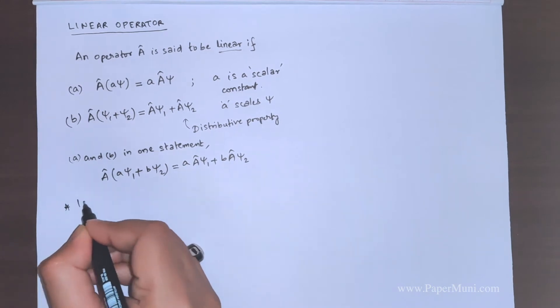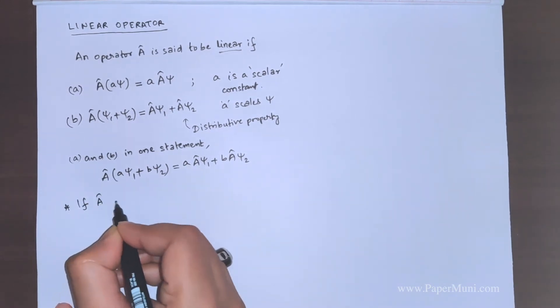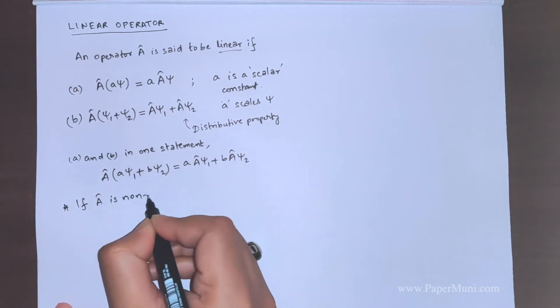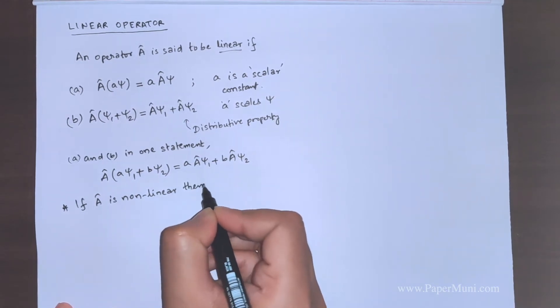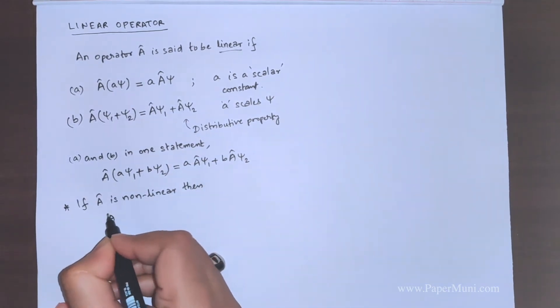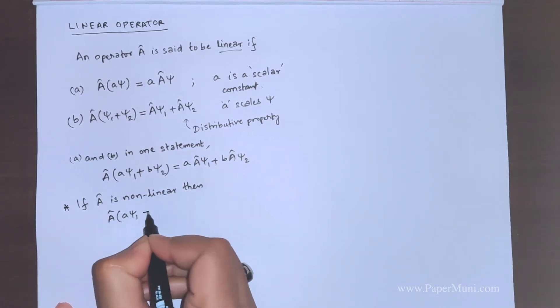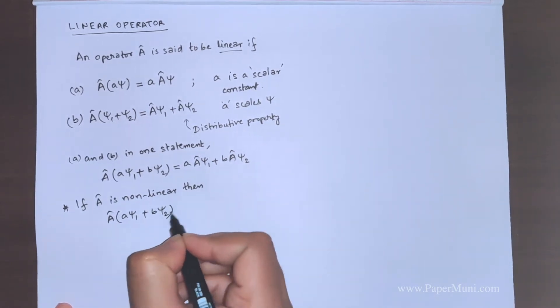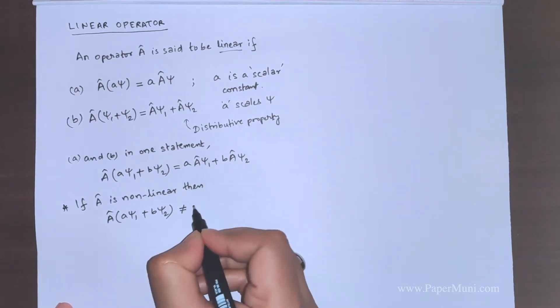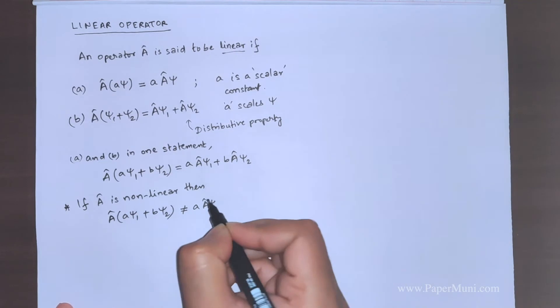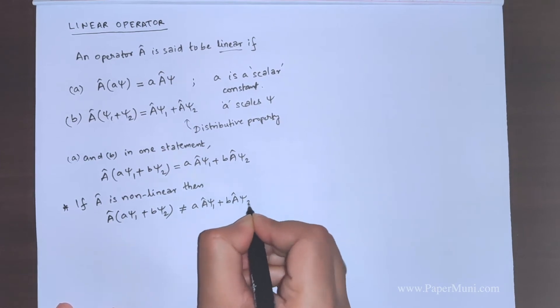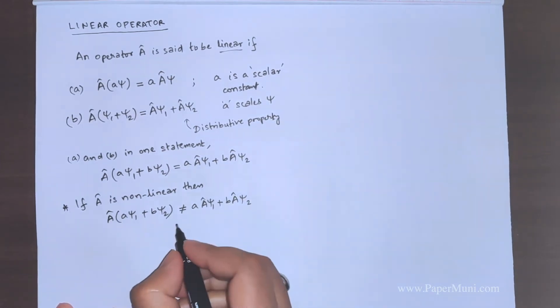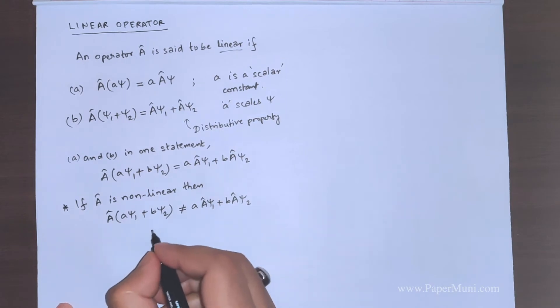If A is nonlinear, then A operating on A psi 1 plus B psi 2 will not be equal to A psi 1 plus B A psi 2. In this case, the A's and B's can be complex or real.